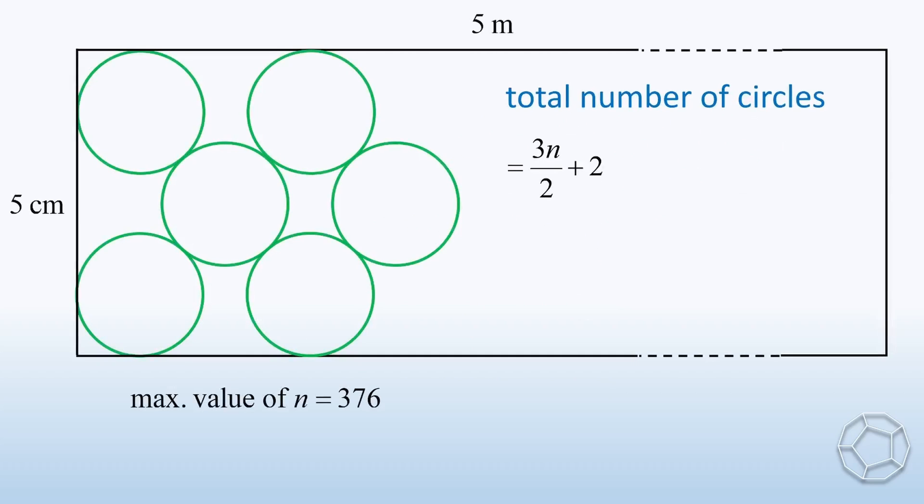Let's put n equals to 376 into the formula. Therefore, the maximum number of circles is equal to 566.